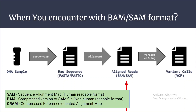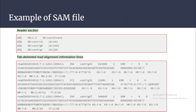At the third step we encounter the BAM, SAM, and CRAM file formats. SAM stands for Sequence Alignment Map. It stores alignment data — information of reads mapped against the reference sequences. It is a human-readable format with tab-delimited text. BAM and CRAM are basically the compressed versions of SAM files and they are non-human-readable formats.